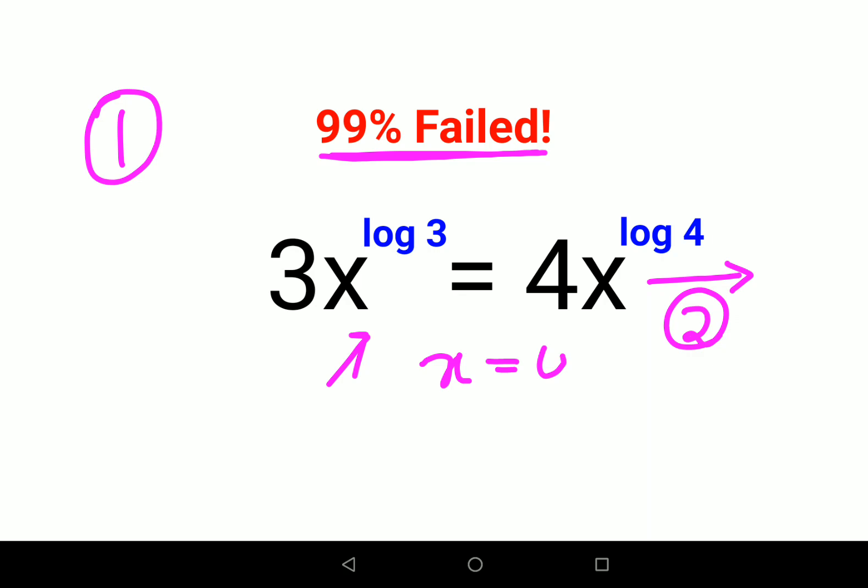That is if you take the value of x as 0. When you put the value of x as 0 here, eventually the entire LHS becomes 0, and here also if you put the value of x as 0, then the entire RHS also becomes 0. So for now, the first value of x is equal to 0.